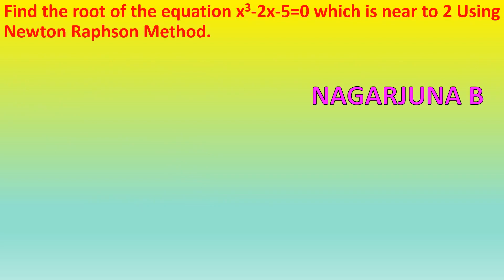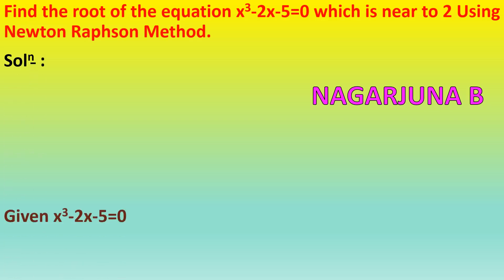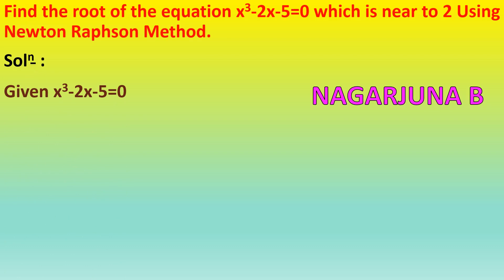Find the root of the equation x³ − 2x − 5 = 0, which is near to 2, using Newton-Raphson method. Solution: they have given x³ − 2x − 5 = 0. Consider this as f(x), so let f(x) = x³ − 2x − 5.